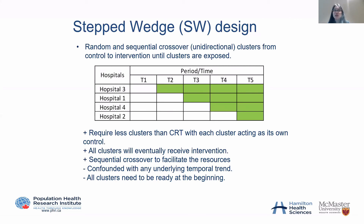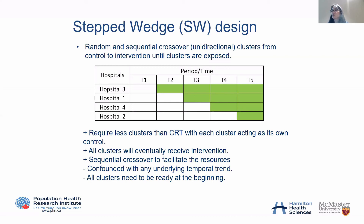Because cluster randomized trials require a larger sample size, one way to regain efficiency is through a stepped wedge design or a crossover trial. In a stepped wedge design, each cluster receives both the intervention and control — hospitals are sequentially randomized and cross over from control to intervention at time points T1, T2, T3, T4. Each hospital has some periods receiving control and some periods receiving intervention, with each cluster acting as its own control, allowing us to reduce the required sample size and number of clusters.